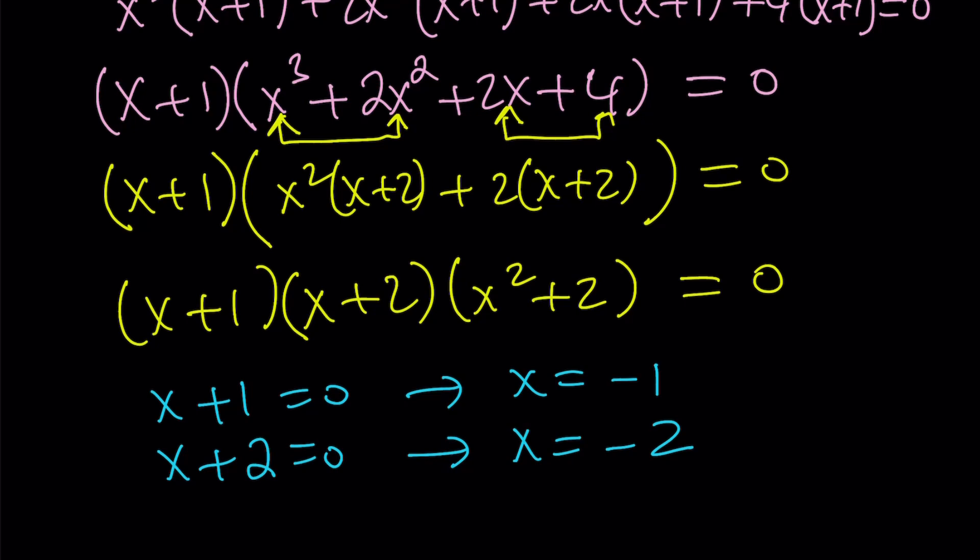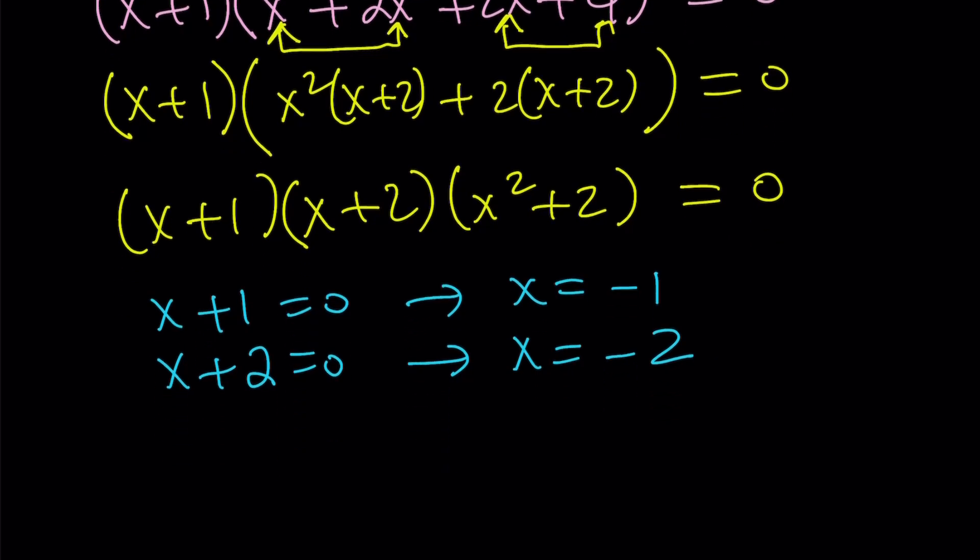Anyways, x equals negative 1, and negative 2 are the real solutions, but x squared plus 2 equals 0 is not going to give us real solutions. The solution is going to be non-real, or you can call them complex if you want. And from here, we get x squared equals negative 2. If you take the square root of both sides, you're going to get square root of 2 times i, plus minus. So, that's going to be the solutions.